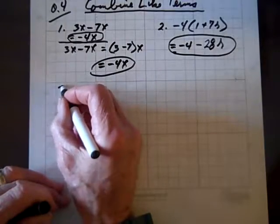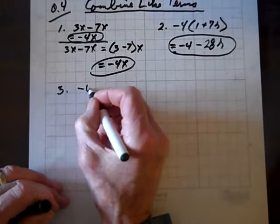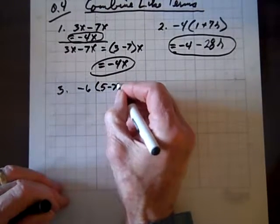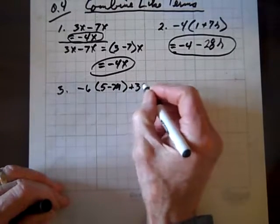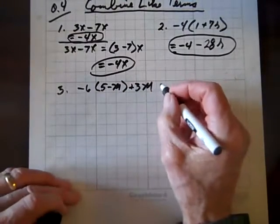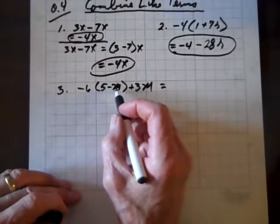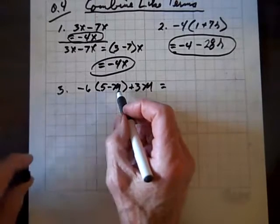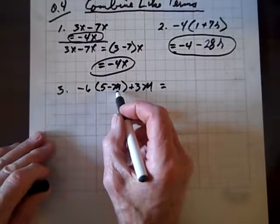Now, I have one more to do, number 3, and here it is. Negative 6 times 5 minus m plus 3m, and notice 5 and m are not like terms, so this is as simple as that sum is going to get.